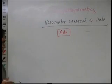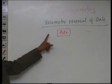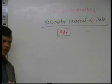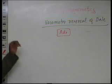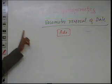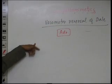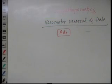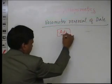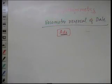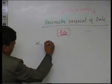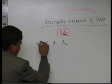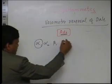As we have already discussed, adrenaline can act on all receptors: alpha1, alpha2, beta1, and beta2. On the blood vessel we have two receptors — alpha1 and beta2. We discussed that alpha1 causes constriction and beta2 causes dilation. An important point about adrenaline is that of the four receptors, two are present on the blood vessel.